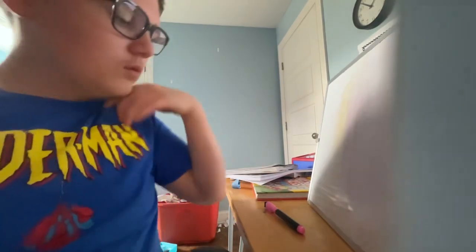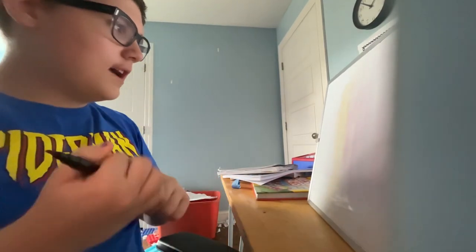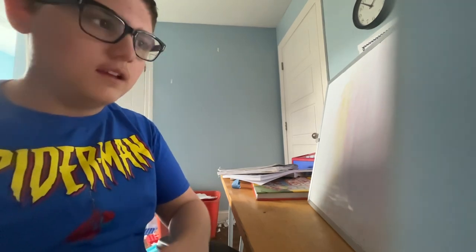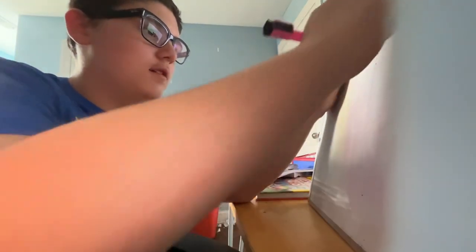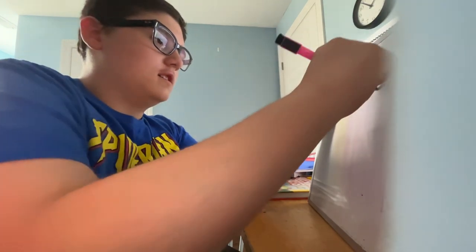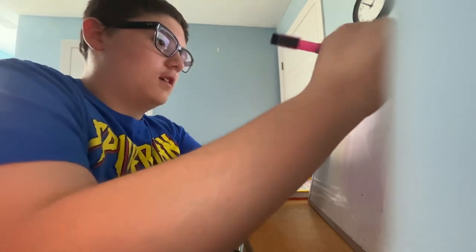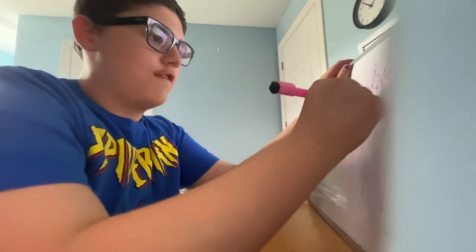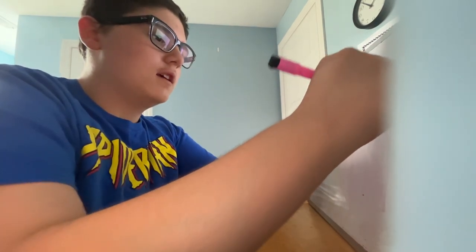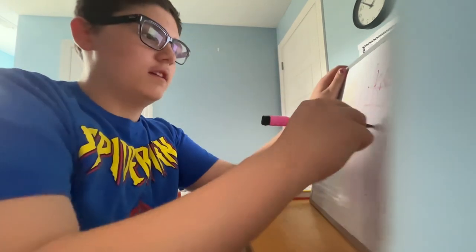In this word ladder short, I'm going to explain how to turn HIT into GLUE by using a word ladder. Change the vowel I to a U to get HUT.